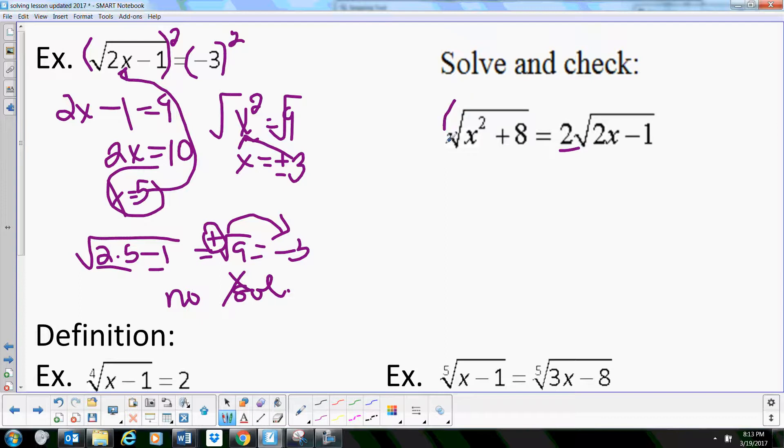But that's okay because what we're going to do is we're just going to square both sides. So we want to square the entire right side and then you're going to end up with x squared plus 8 is equal to, and be very careful, this is going to be 4 times 2x minus 1.